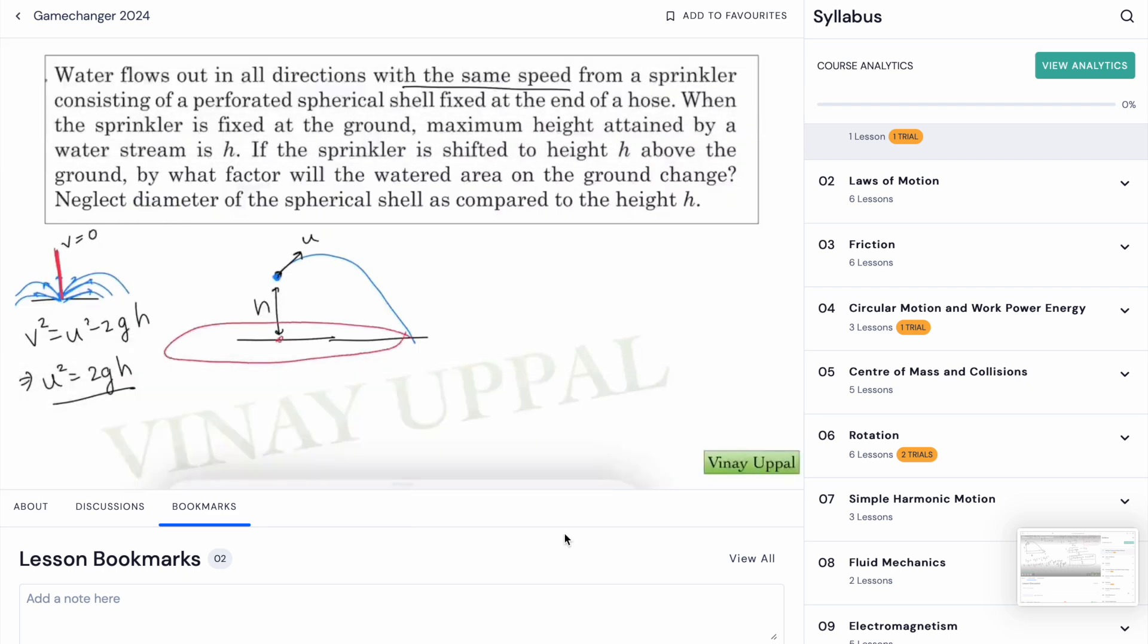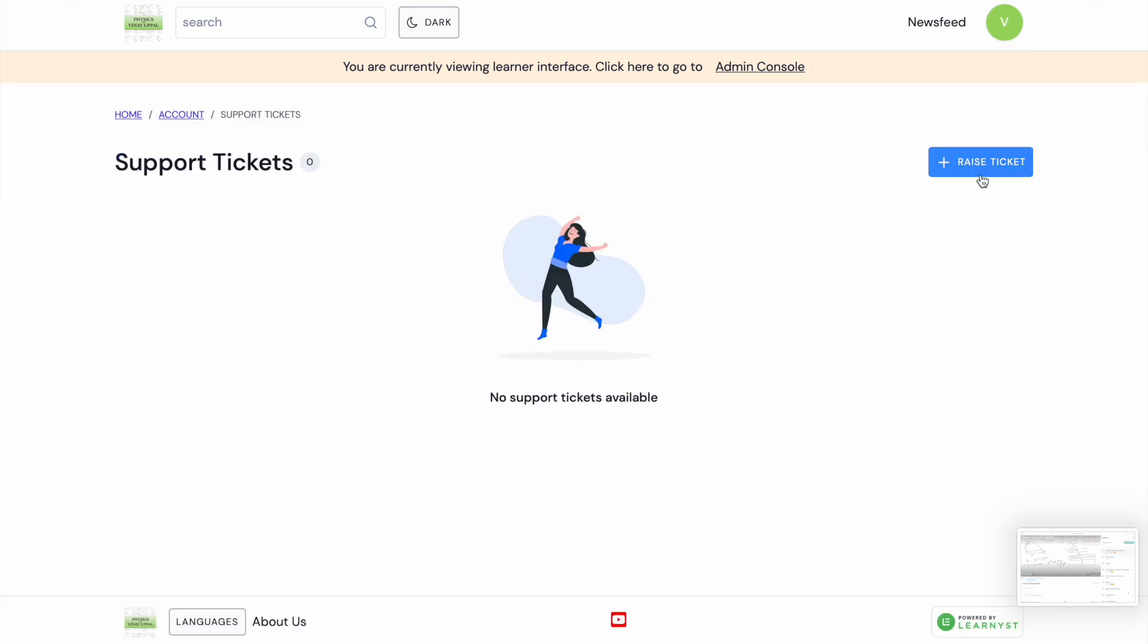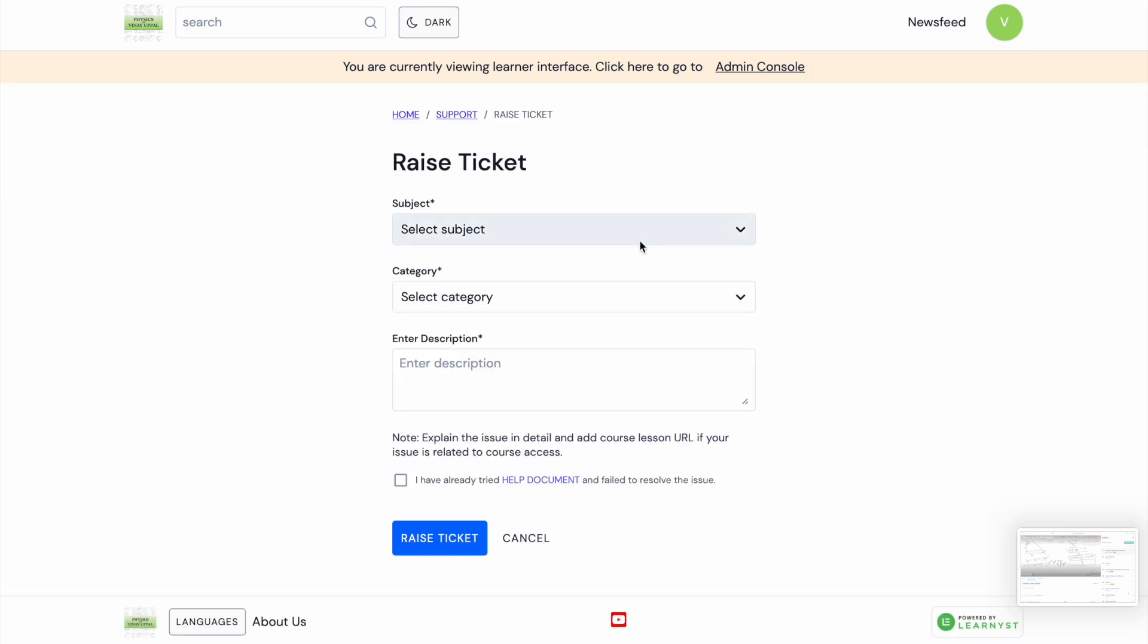Also if you have any technical issues for the courses, just go back and just press this icon here on the right hand side top of the screen and just go to Support and you will be able to raise a ticket here. Once you press Raise a Ticket you'll be able to select what category the issue is in: lesson, player issue, test, whatever it is. You can just select that and just ask your query here.